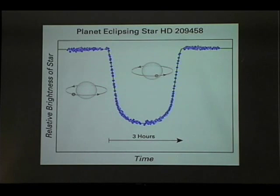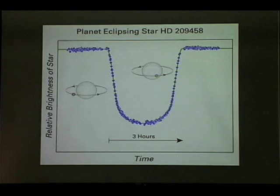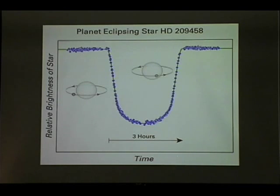In a few very rare cases, our line of sight is such that the planet eclipses its parent star. When that happens, the light of the star dims by about one to two percent. These are real observations by Hubble of one such dimming of one to two percent, and Hubble can see this dimming with very high precision.